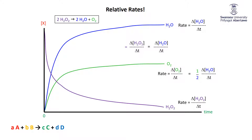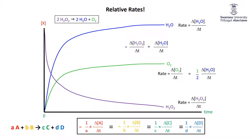For the general reaction aA + bB → cC + dD, we can express the rate in terms of the concentrations of A, B, C, or D. The relationship between them, normalized, is one over the coefficient. To normalize it: (1/a)(rate with respect to A) = (1/b)(rate with respect to B) = (1/c)(rate with respect to C) = (1/d)(rate with respect to D). Reactants are made negative so that all these numbers are nice positive numbers.